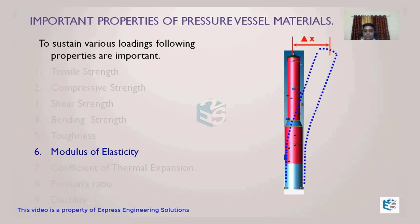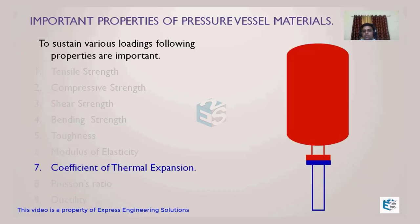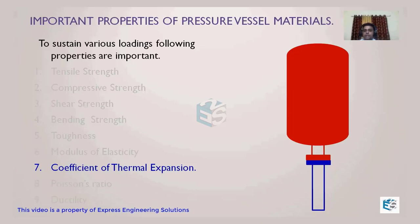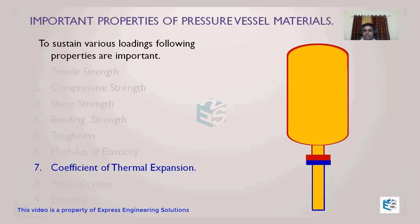The next important property is the coefficient of thermal expansion. As we can see in this animation, if a vessel has a pipeline attached at the bottom through which hot fluid enters, the vessel will expand. Any metal when heated will try to expand, and when heat is removed it will contract. To calculate stresses developed due to thermal expansion, we must know the thermal coefficient of expansion. Every metal has its own value.